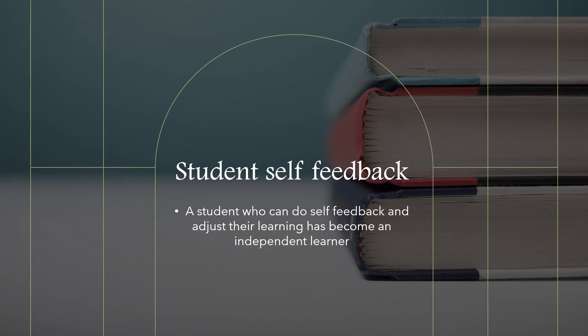Student self-feedback: in order to create great work, students need to know what great work looks like. Anchor charts around the room and rubrics for grading and feedback should be available to help them self-assess. Teachers need to show and teach students how to use the feedback rubrics and grading rubrics to determine next steps and set goals. Teachers also need to allow time for self-feedback and reflection as a whole group to model how it's done.